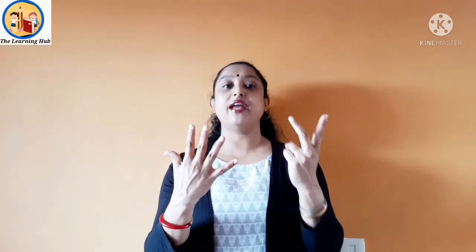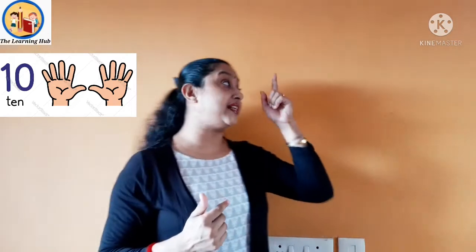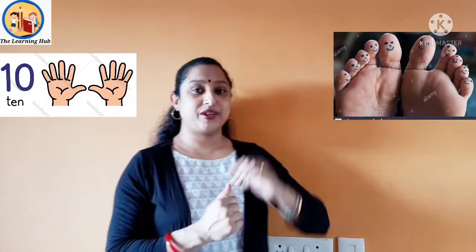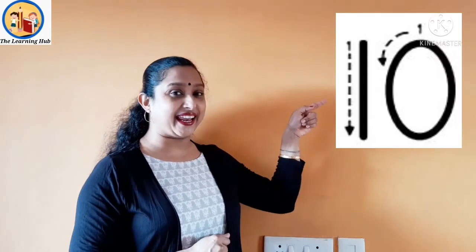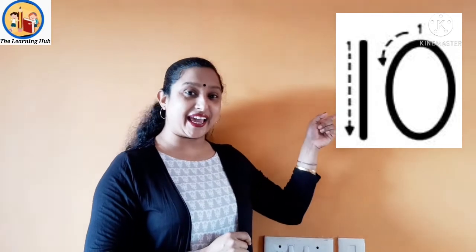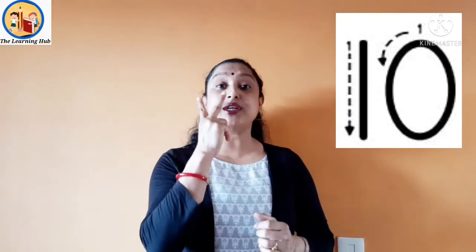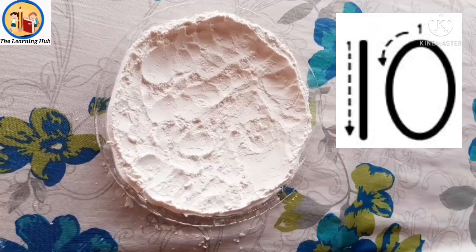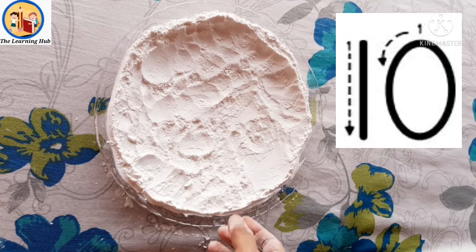Let's count: one, two, three, four, five, six, seven, eight, nine, ten. We have ten fingers and ten toes. So children, today we are going to learn number ten. This is number ten — one, zero, ten. Number one and zero are best friends; they make number ten. Number ten is the first two-digit number and also the smallest two-digit number.